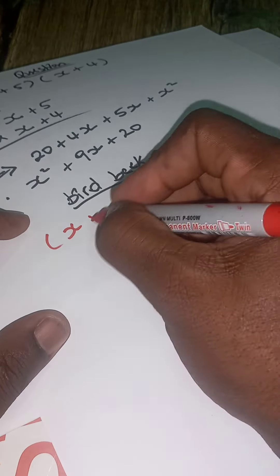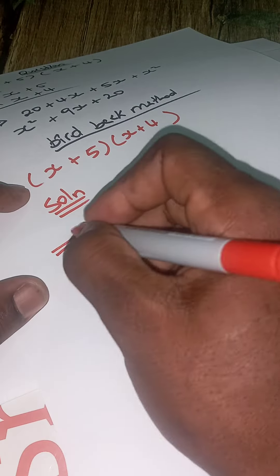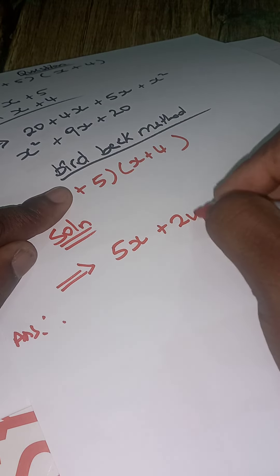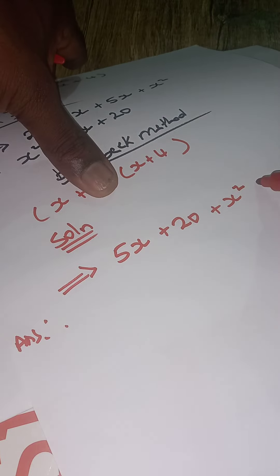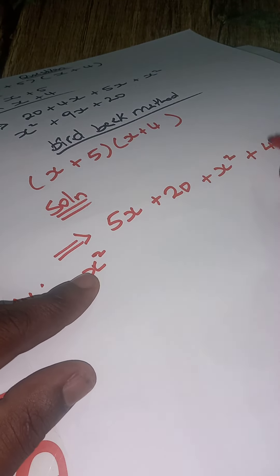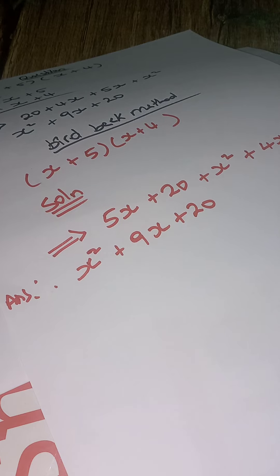For the bird beak method: x plus 5, x plus 4. Solution — you cover one first and say 5 times x is 5x, 5 times 4 is 20. Then cover the other and say x times x is x squared, and x times 4 is 4x. Simplify: always put the x with the higher degree first — x squared — then 4x plus 5x is 9x, plus 20. This is for CXC students.